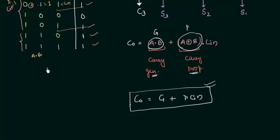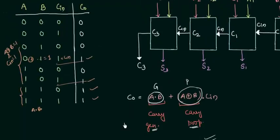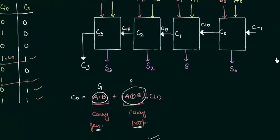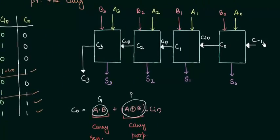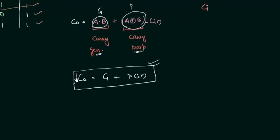So let's generalize it and generalization will be done by using this full adder configuration. If C-1 is your carry input, C0 is your carry output. Similarly if C0 is your carry input, C1 is your carry output. So I can say that Ci is there if I talk about this part.